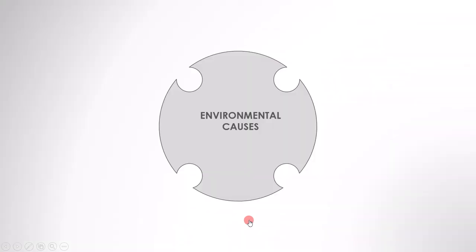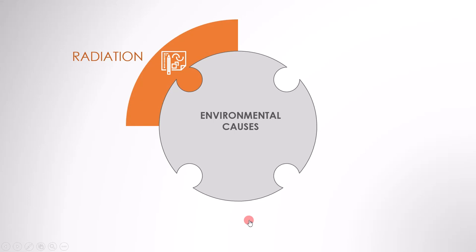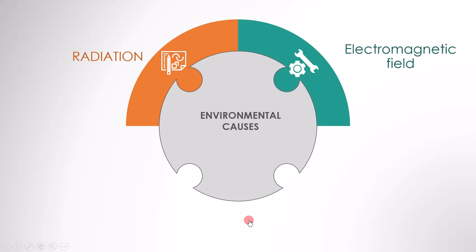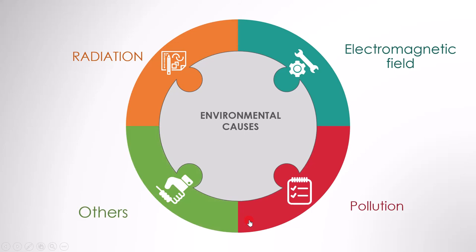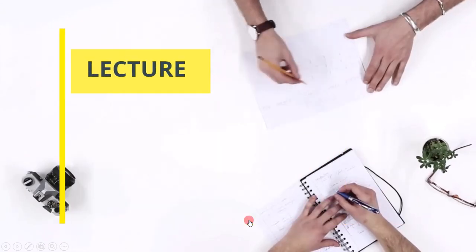Let's move on to environmental causes. The first cause is radiation — radiation can cause a defect. The next one is electromagnetic field; we all know how on flights we are asked to switch off our mobile phones to avoid creating electromagnetic fields which can cause interference. The third one is pollution — if there are dust particles on the sensor, it could result in an error. There could be many other environmental causes as well.